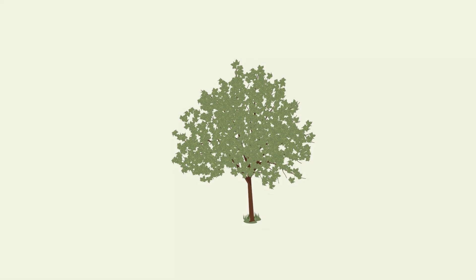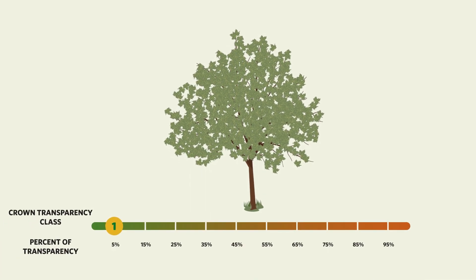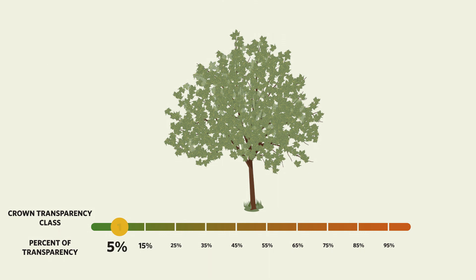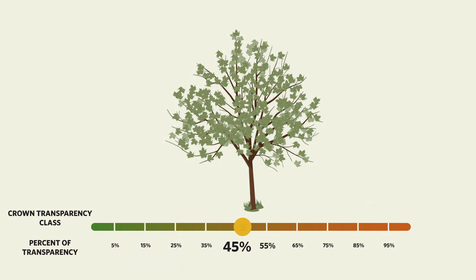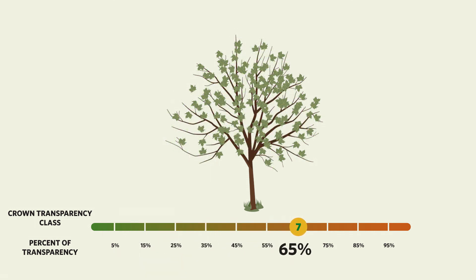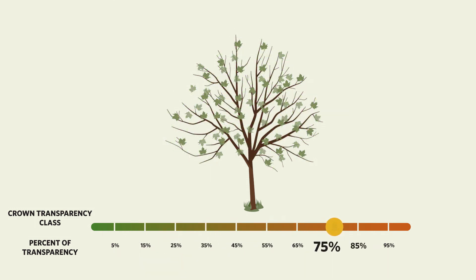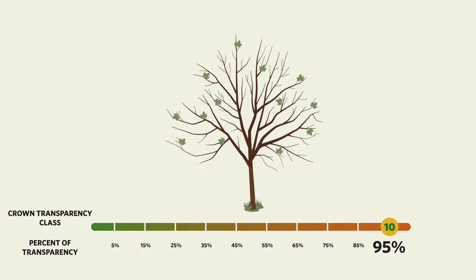Estimates are rounded to the nearest of 10 crown transparency classes. Specifically, class 1 equals up to 5% transparency, class 2 is 6 to 15%, and so on in 10% increments up until class 10, which is greater than 95%.